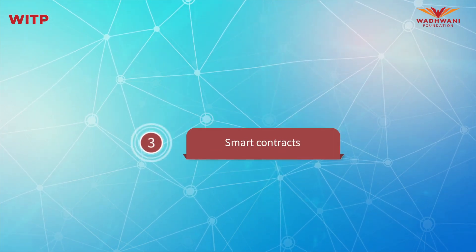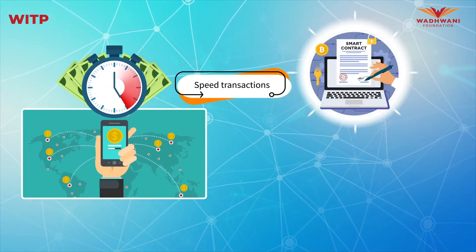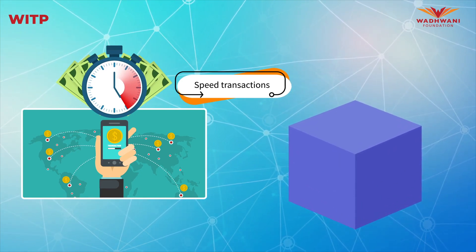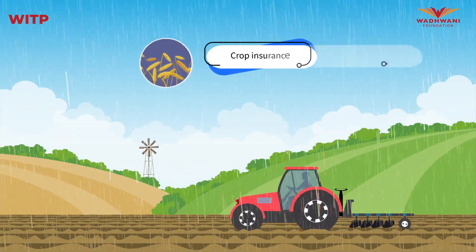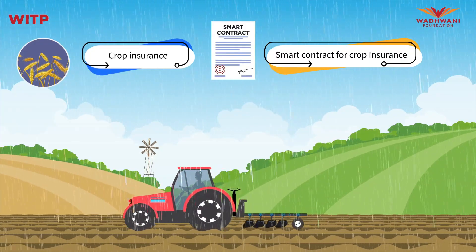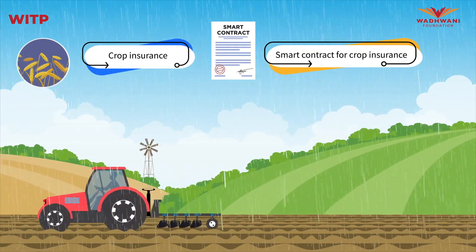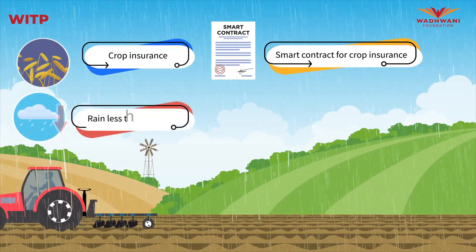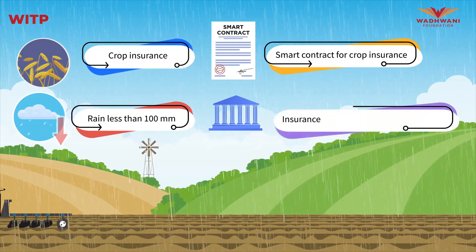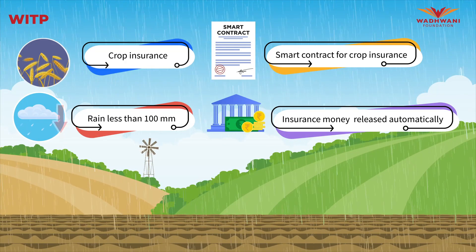Smart contracts: to speed up transactions, a set of rules called a smart contract is stored on the blockchain and executed automatically. For instance, a smart contract for crop insurance would define conditions under which insurance needs to be paid. If criteria are met — such as rainfall of less than 100 millimeters in the sowing period — the insurance money would be released automatically without human intervention, directly to the farmer.